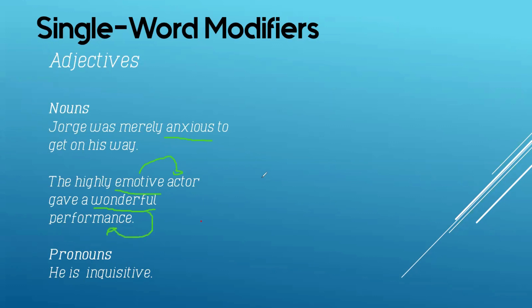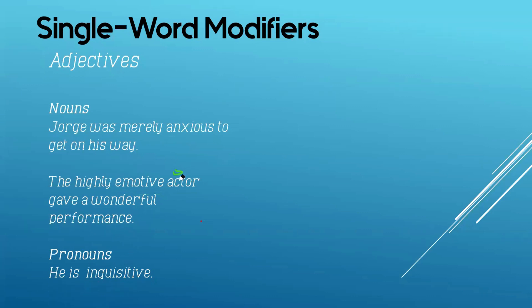And as we all know, adjectives may describe nouns or pronouns. 'He is inquisitive.' The adjective here is inquisitive, modifying the pronoun he. So, that would be all about single word modifiers.